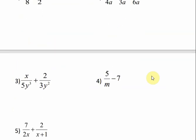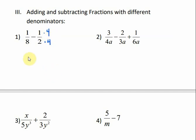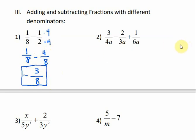Now let's move on to adding and subtracting rational expressions with different denominators. First we need to find the least common denominator between our fractions. In number 1, the smallest number that both 8 and 2 can divide into would be 8. Remember, start with your bigger one and see if the other one can divide into it — and it can. So to get 2 to be 8, I just need to multiply times 4. That gives me 1 over 8 minus 4 over 8. So my denominator is 8, and 1 minus 4 is negative 3. That can't be reduced, so that is my solution.